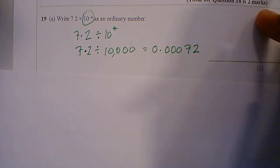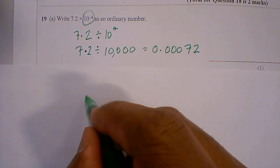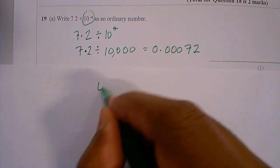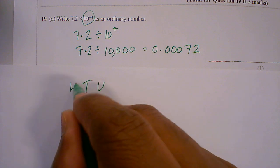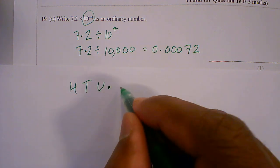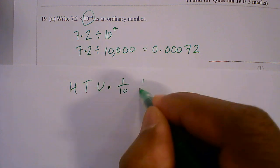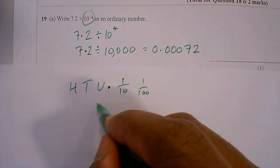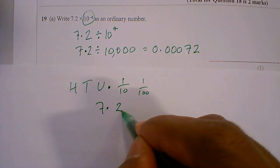Now if you don't know how that is, I put place values in: units, tens, hundreds, and on the other side a tenth and a hundredth, and then we put our 7.2 in.